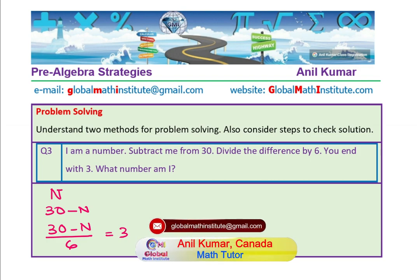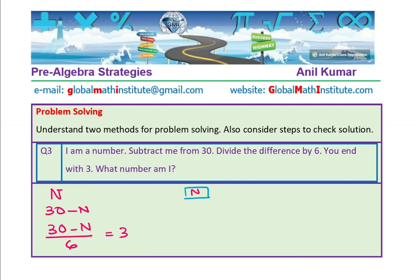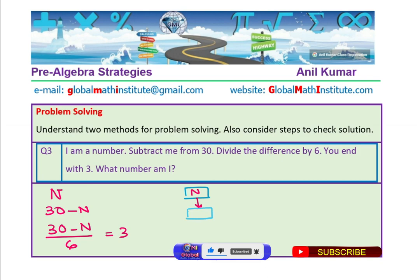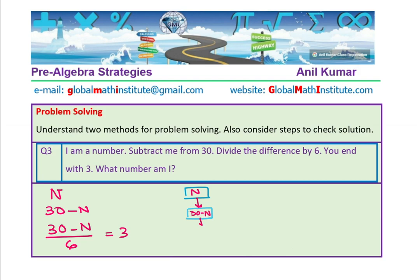You can also think of it as a flow chart or diagram. I am number n. In this case, from 30 you subtract the number, giving 30 minus n. Then divide this by 6. You get 3. Now we will go backwards: instead of divide by 6, multiply by 6, which gives 18. That is the reverse operation — the reverse of division is multiplication.